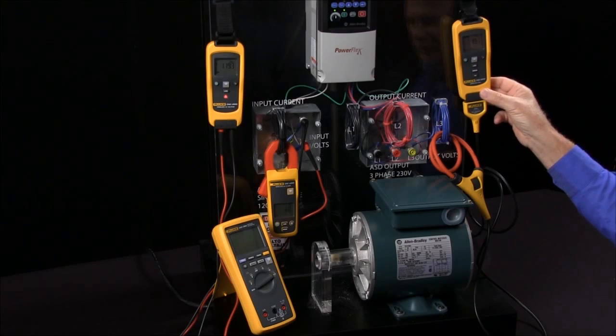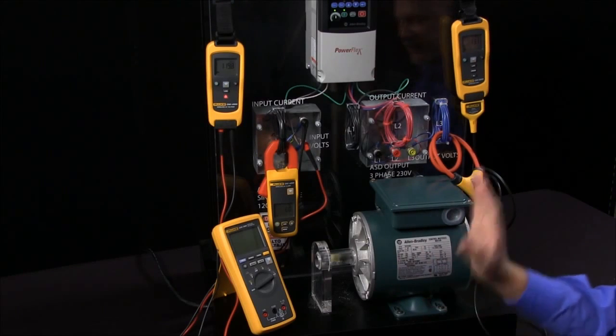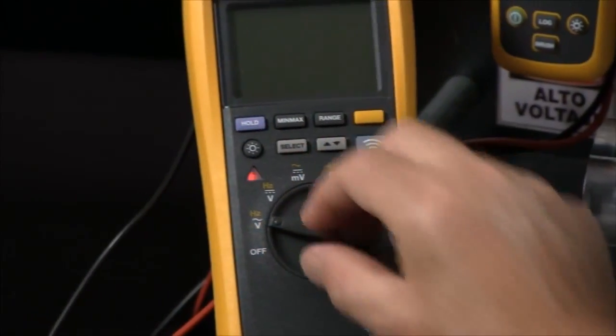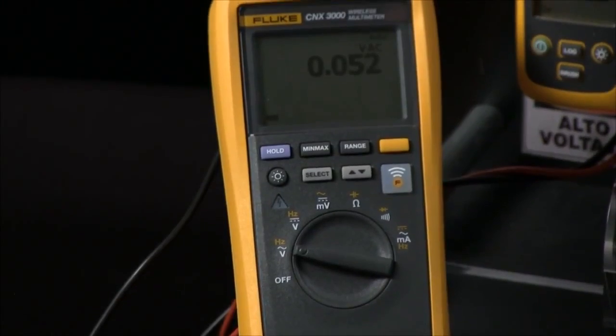We can remotely take these measurements at a distance. We could actually have this in a cabinet and be away from it. To read those, we simply turn on our CNX module and hit the wireless button.